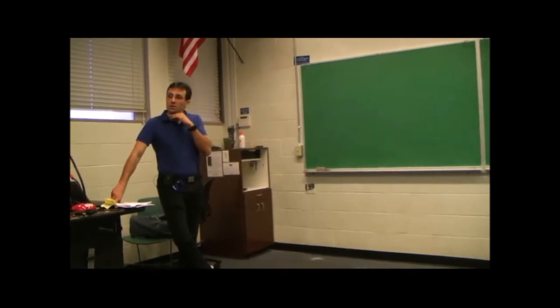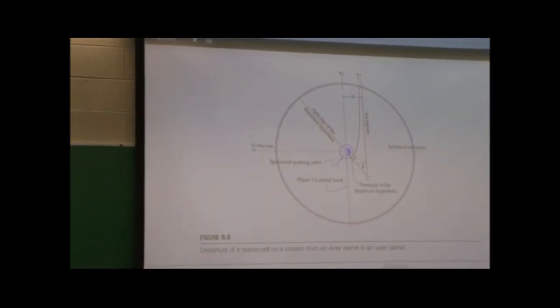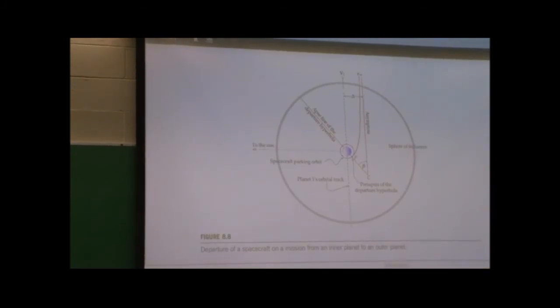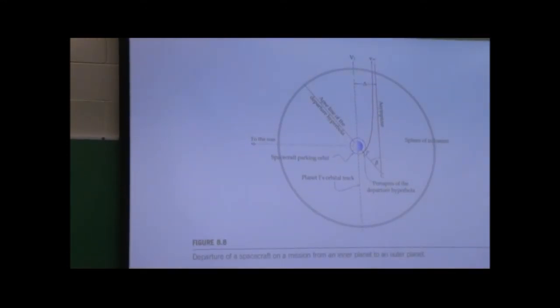I want to finish interplanetary trajectories today, giving you some highlights and solutions for delta-V's in particular, which I'm not going to derive because it's all based on Keplerian orbits. All the bodies are assumed to be perfectly circular, perfectly spherical, and uniform mass distribution. We just use what we learned in Keplerian astrodynamics to transfer from one sphere of influence to the other. This is preliminary interplanetary trajectories.